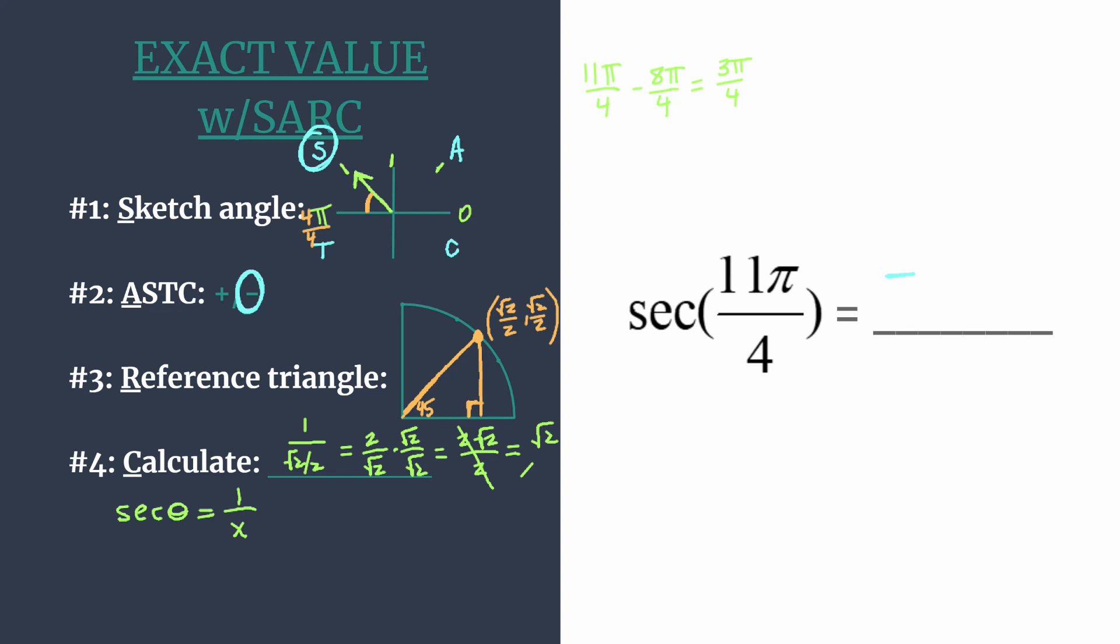In step 2, we found that our final answer should be negative. We already made note of that. So the secant of 11π over 4 is just negative √2. And that's all there is to it.